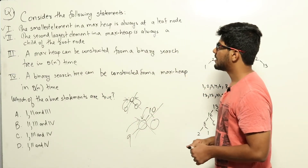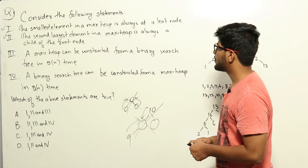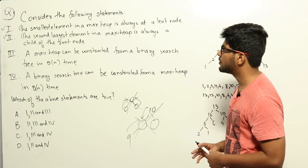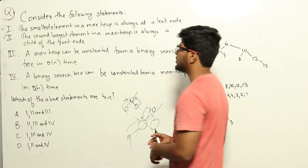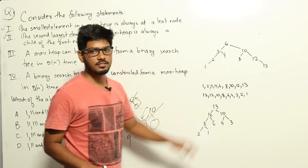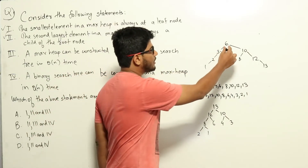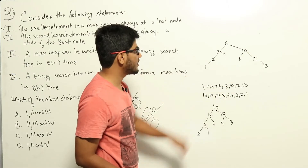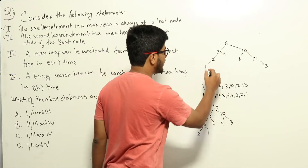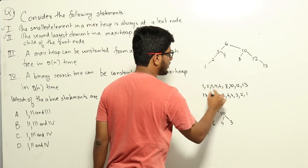Statement 3: a max heap can be constructed from a binary search tree in theta(n) time. This is correct — let me show you the algorithm. Given a binary search tree, if we do an in-order traversal, we get the elements 1, 2, 3, 4, 6, 8, 10, 12, 13.